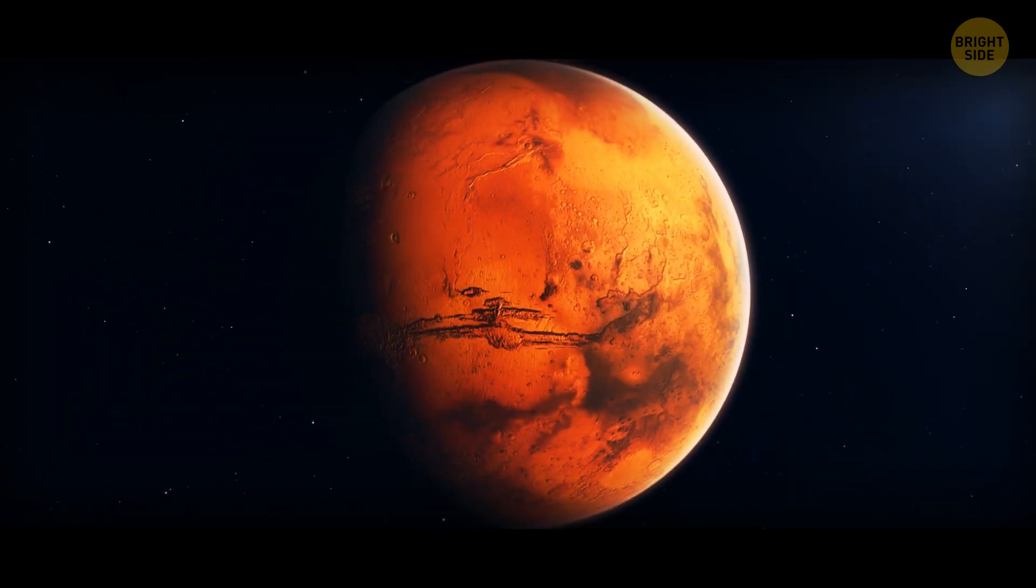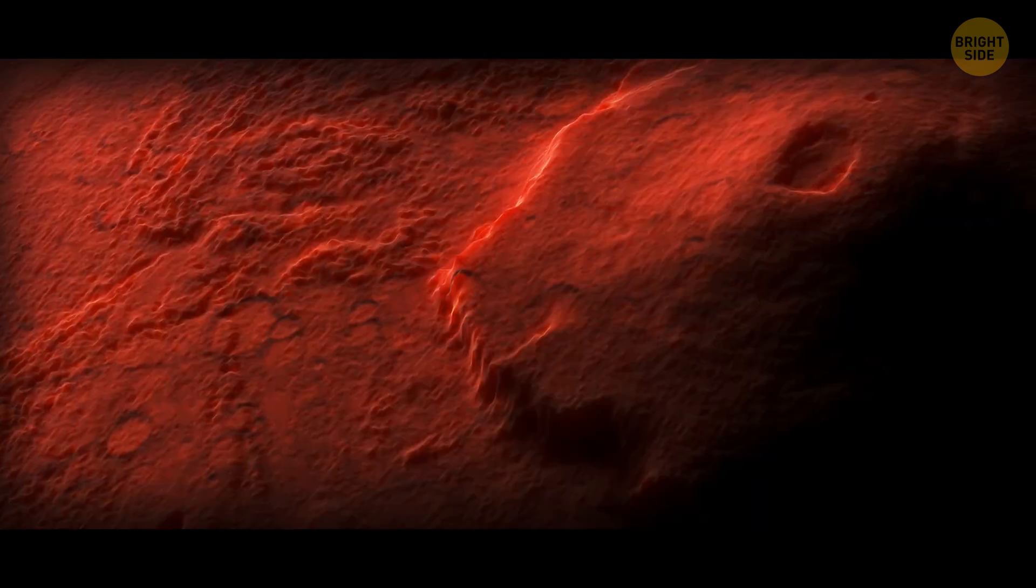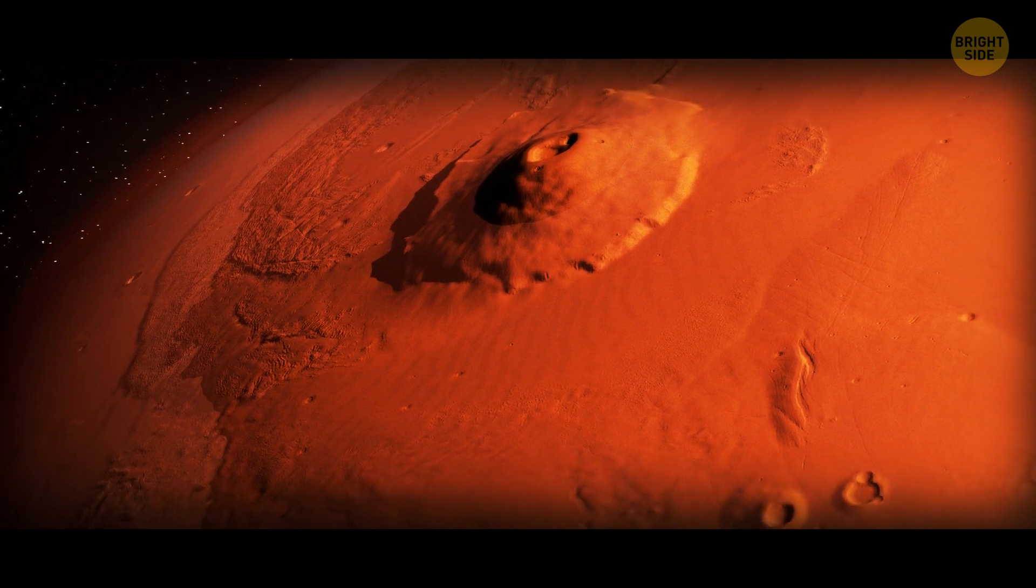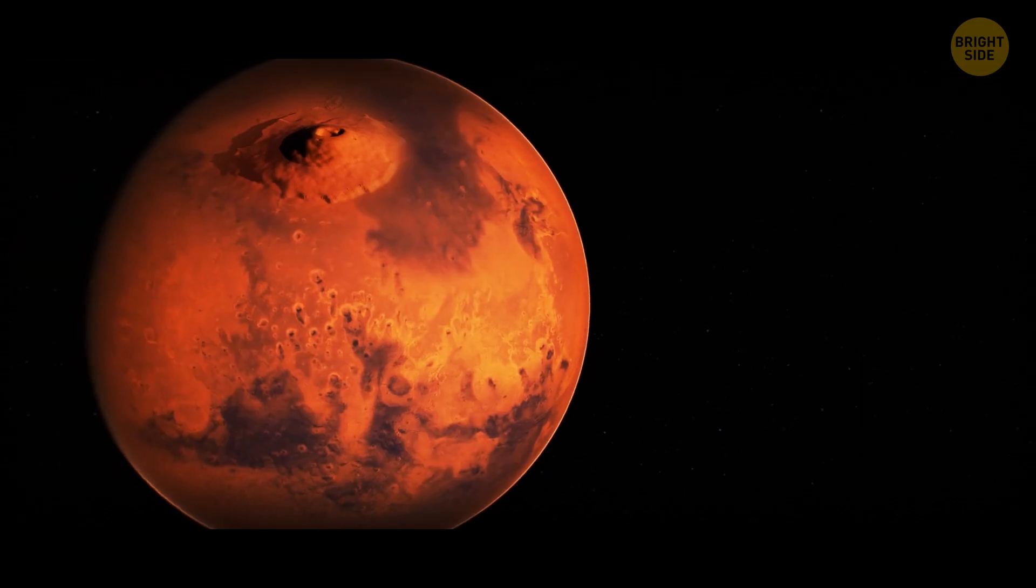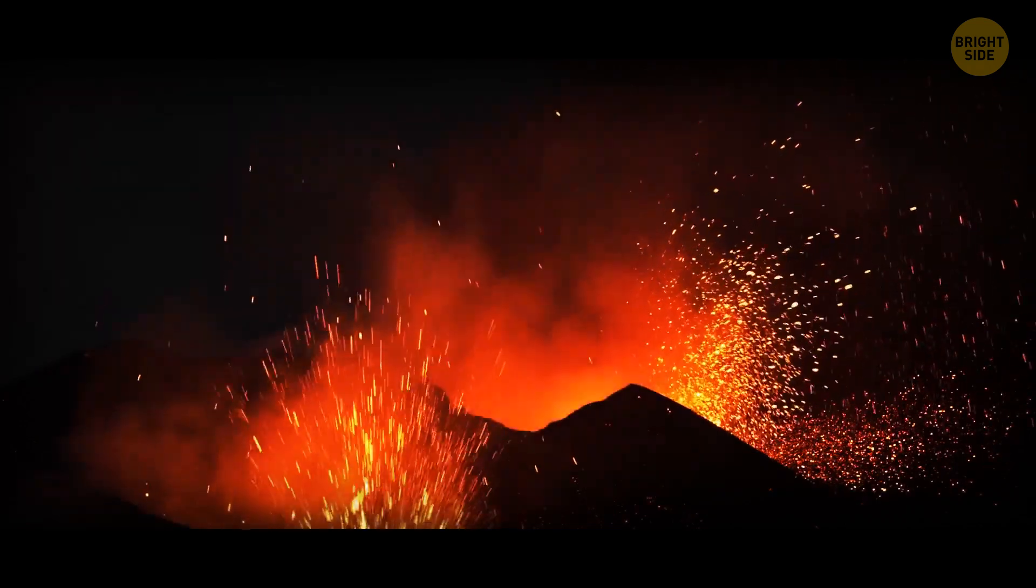Mars has the biggest volcano in the solar system that we know of so far. It's bigger than the whole state of Hawaii and 100 times larger than the biggest volcano on Earth. The red planet seems so quiet, but once upon a time, large volcanoes dominated its surface.